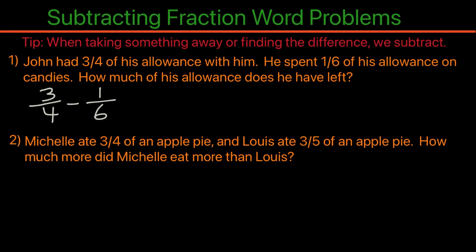We have a situation with subtraction of fractions with unlike denominators. We have four and six, and we need them to have a common denominator. So we will multiply by each other in the denominator. Four will multiply by six, and the numerator also by six. When you multiply the denominator by a certain number, you need to multiply the numerator also by the same number. And for the six, we're going to multiply by four, and also the same for the numerator.